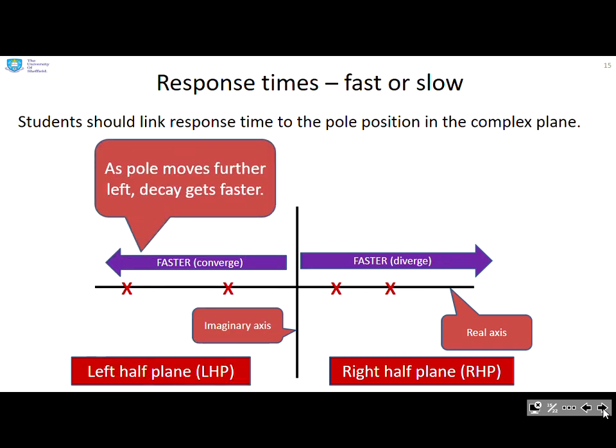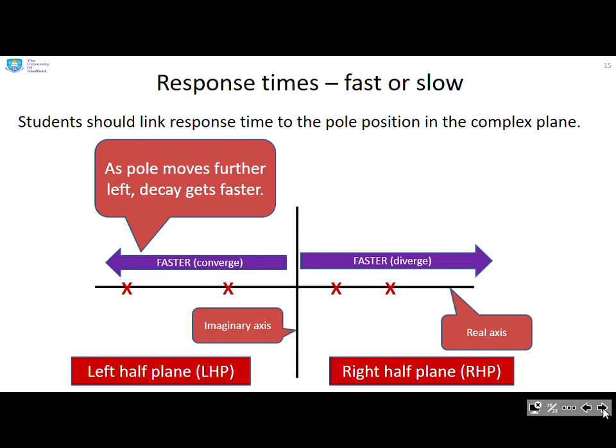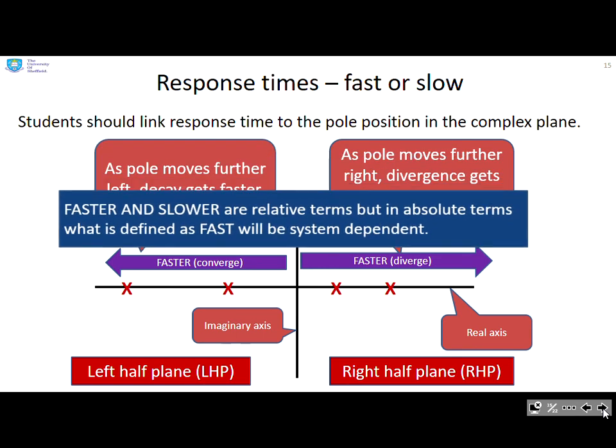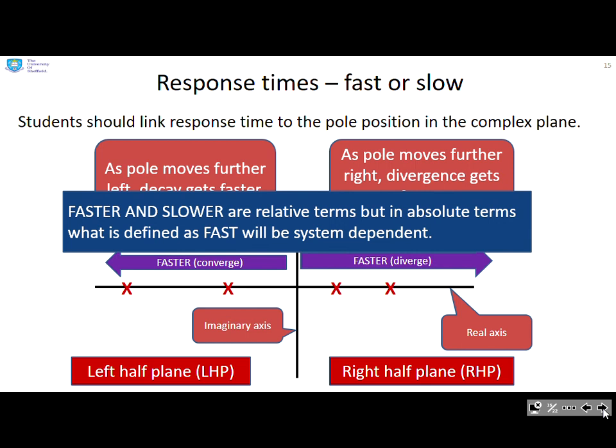Response times, and this is really what you will observe. As the pole moves further to the left, then your convergence, your decay, gets faster. Conversely, if your pole moves further to the right, and especially if you're in the right half plane, your divergence gets faster. However, here's a key point: faster and slower are relative terms. But in absolute terms, what is defined as fast is going to be system dependent. So it's very important that you as the engineer decide what is fast and slow for my particular system.